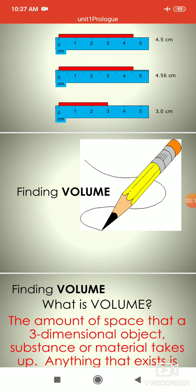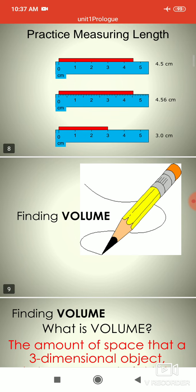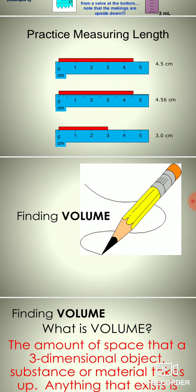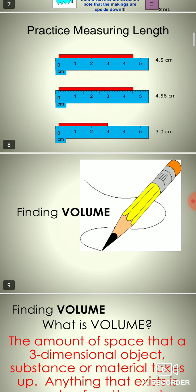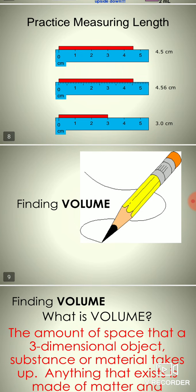Density means how much tightly mass is packed in a certain amount of space. In the form of mathematical representation, we can say that density is mass per unit volume.